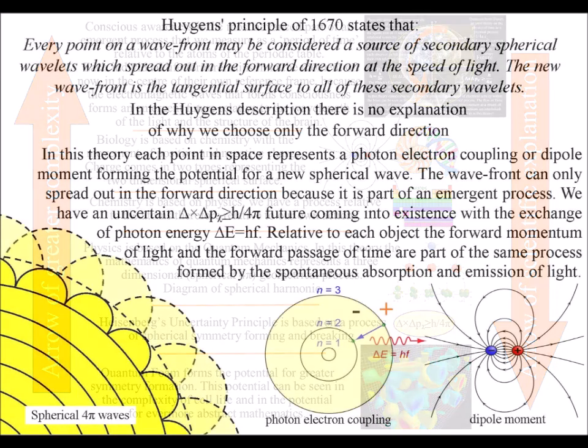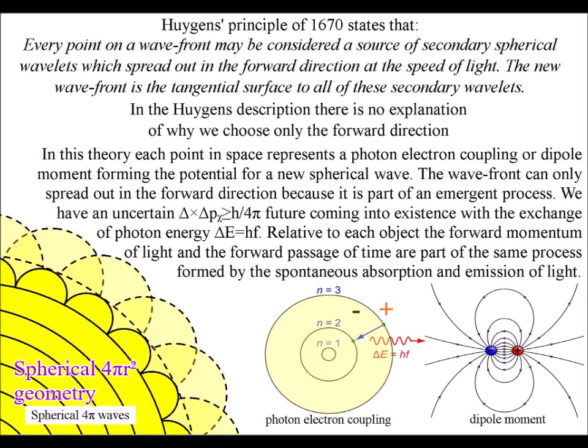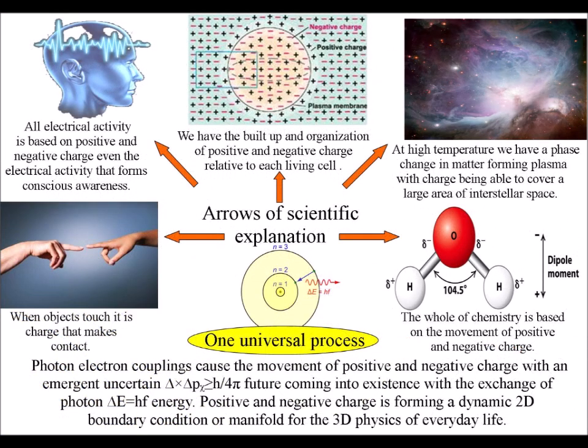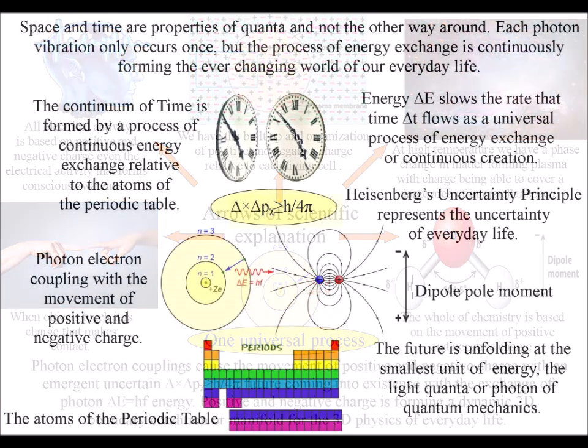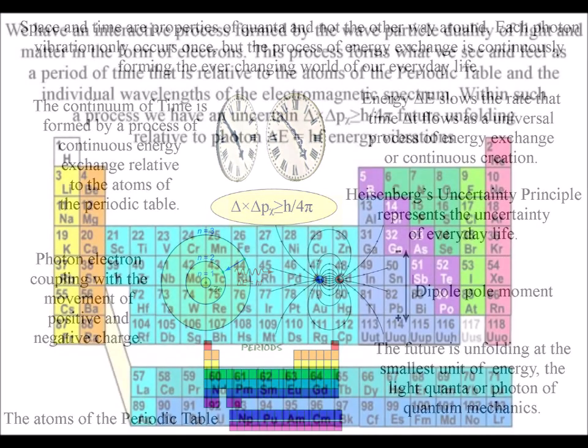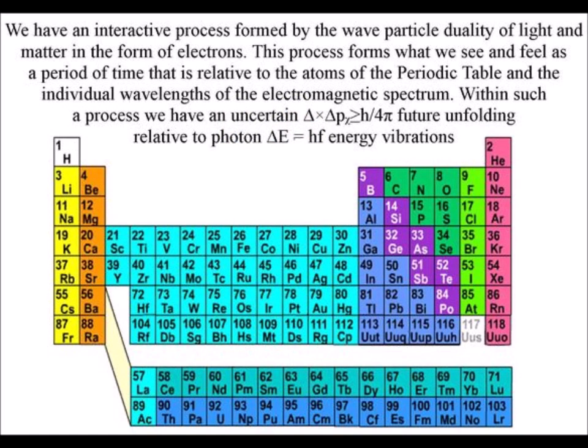Light photon energy is continuously transforming potential energy into the kinetic energy of matter in the form of electrons. Kinetic energy is the energy of what is actually happening. The dynamic geometry of this process forms an uncertain probabilistic future, continuously unfolding relative to the electron probability cloud of the atoms and the wavelength of the light.